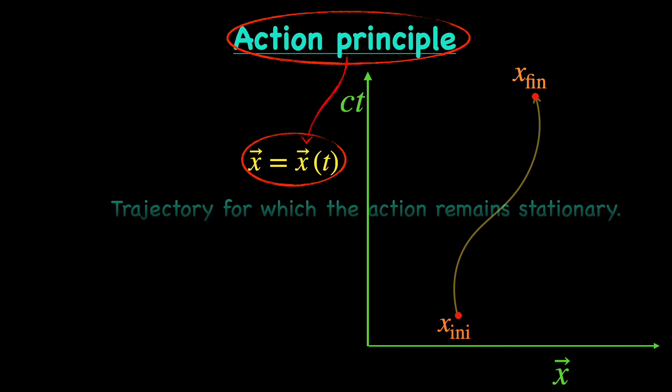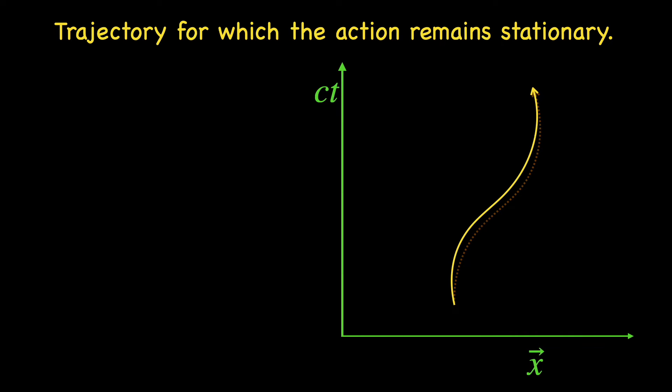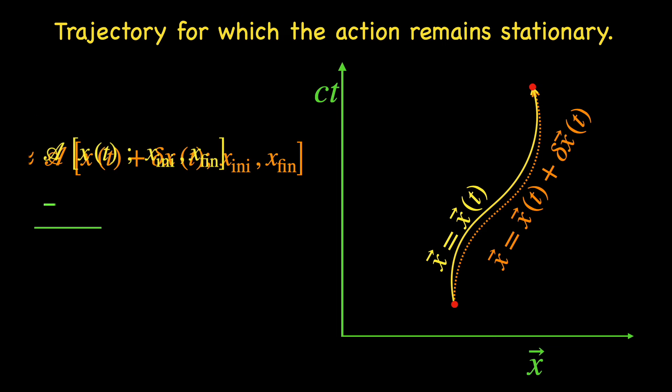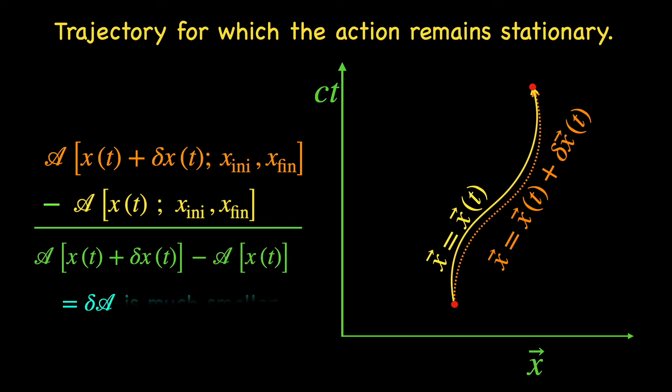What do I mean by the action being stationary for the path the particle chooses to travel along? It means if we change this trajectory slightly, that is infinitesimally, from x(t) to x(t) plus delta x(t), keeping the initial and final locations the same, the value of the action remains almost the same. Almost the same means the difference in the value of the two actions, symbolically denoted by delta A, is way smaller than the order of delta x(t).